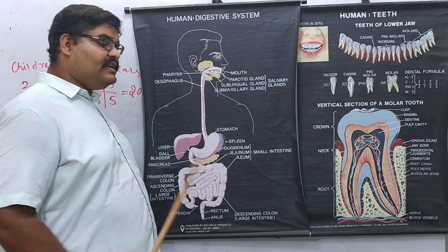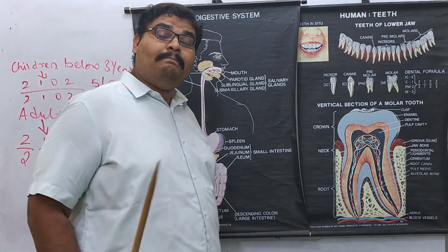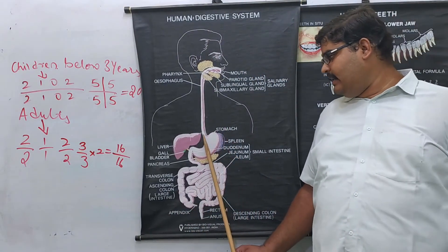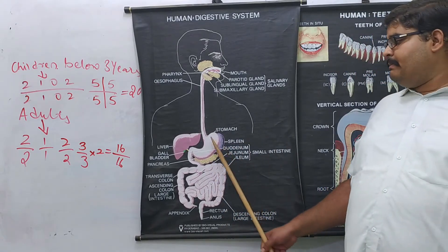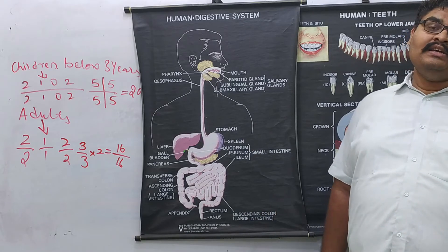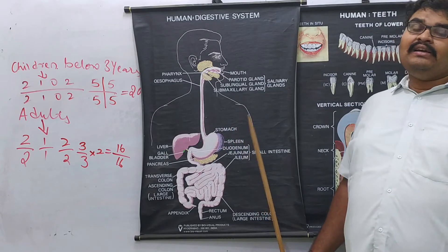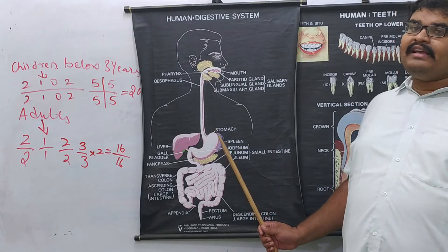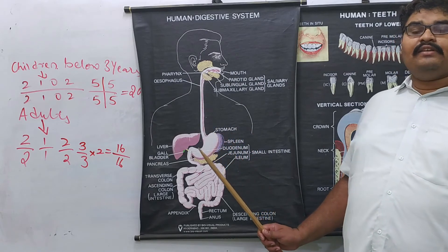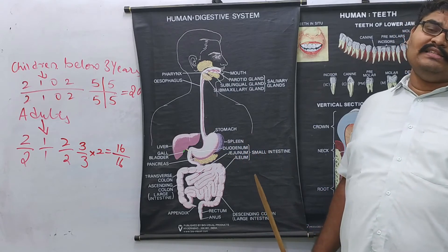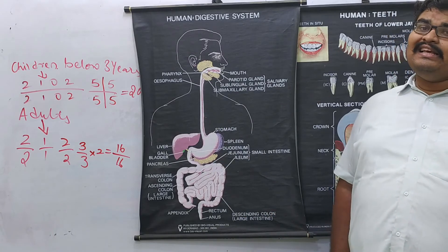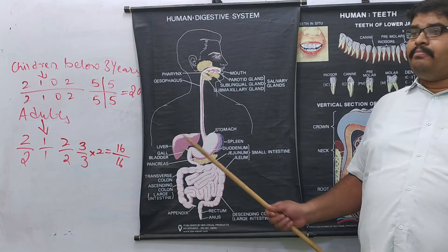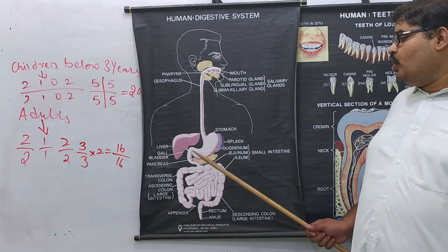The role of sphincters is to prevent the backward flow of digestive enzymes and food. The pyloric sphincter also regulates the flow of food into the intestine. Although some digestion of proteins and absorption of water takes place in the stomach, the stomach is primarily meant for temporary holding or storage of food.